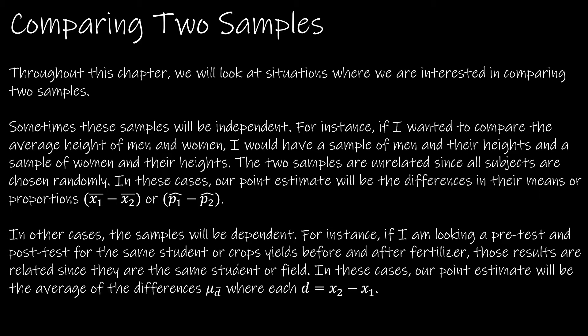Sometimes the samples will be independent. For instance, let's say I wanted to compare the average height of men and women. I would find a random sample of men and their heights, and a random sample of women and their heights, and those two samples would not be related to one another. I wouldn't be looking at siblings' heights, where there would be some natural correlation. I'm looking at a random sample of men and a random sample of women — those two samples would not have any effect on one another, so those would be independent.